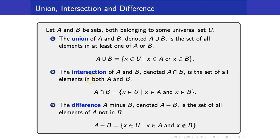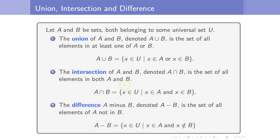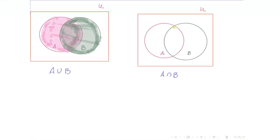Next, the intersection is the set of all elements that belong in both A and B. Hence, the elements will be in this region — you belong in both A and B.